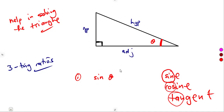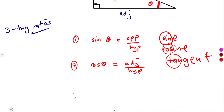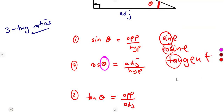The sine of theta is equivalent to the opposite over the hypotenuse — it's a ratio, as we are saying: trigonometric ratios. The cosine of theta is equivalent to the adjacent over the hypotenuse. Then we also have the tangent, where the tan of theta is equivalent to the opposite over the adjacent. So: sin of angle theta, cos of theta, and tan of the angle.